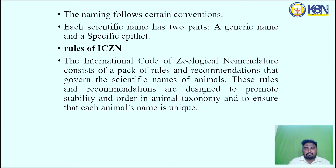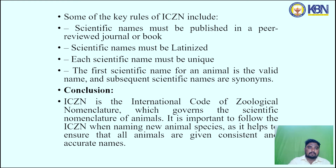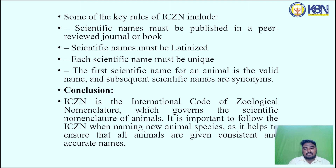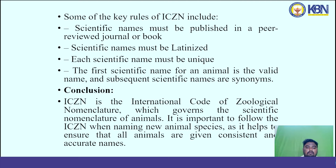The ICZN consists of a set of rules and recommendations that govern the scientific names of animals, designed to promote stability and order in animal taxonomy, ensuring each animal's name is unique. Key rules include: scientific names must be published in a peer-reviewed journal or book; names must be Latinized; each scientific name must be unique; the first published scientific name is the valid name and subsequent names are synonymous. The ICZN is important to follow when naming a new animal species to ensure all animals are given consistent and accurate names.